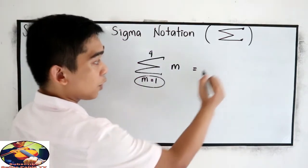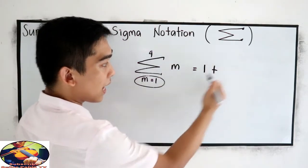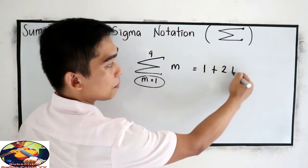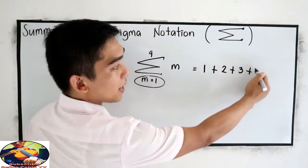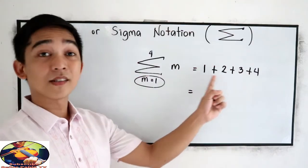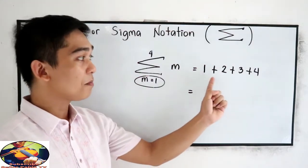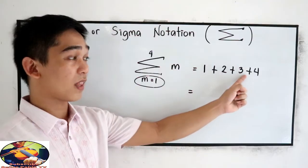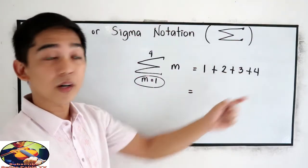So this will become 1 plus 2 plus 3 plus 4. And the sum is 1 plus 2 is 3, plus 3 is 6, plus 4 which is 10. So this will be the sum.